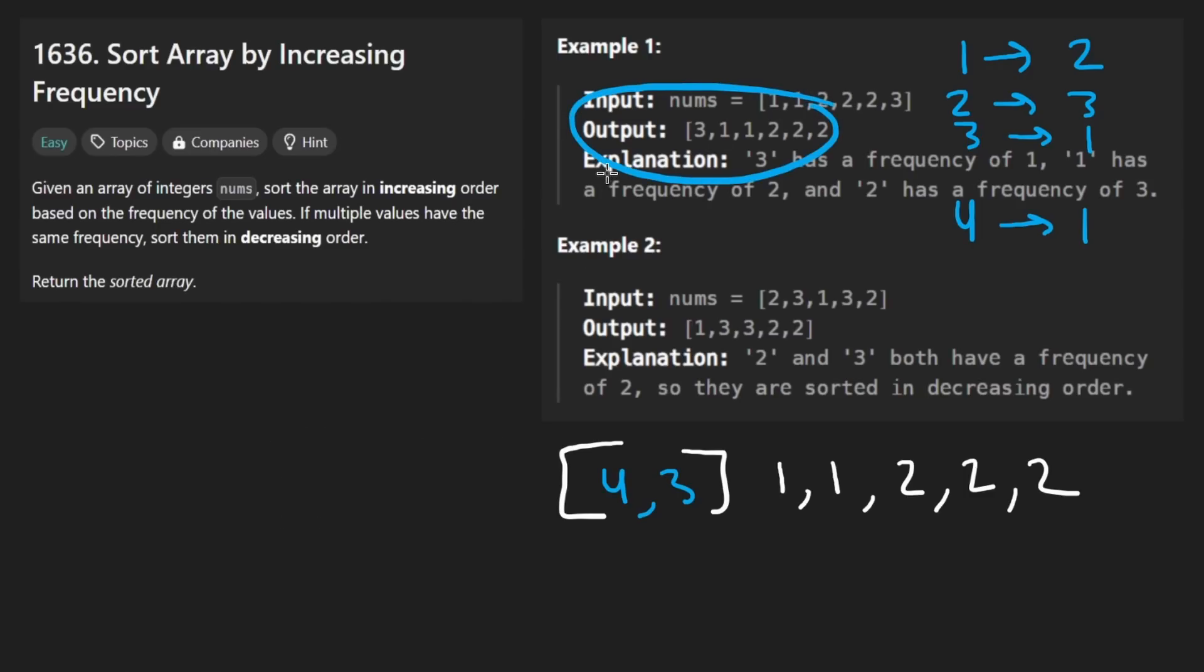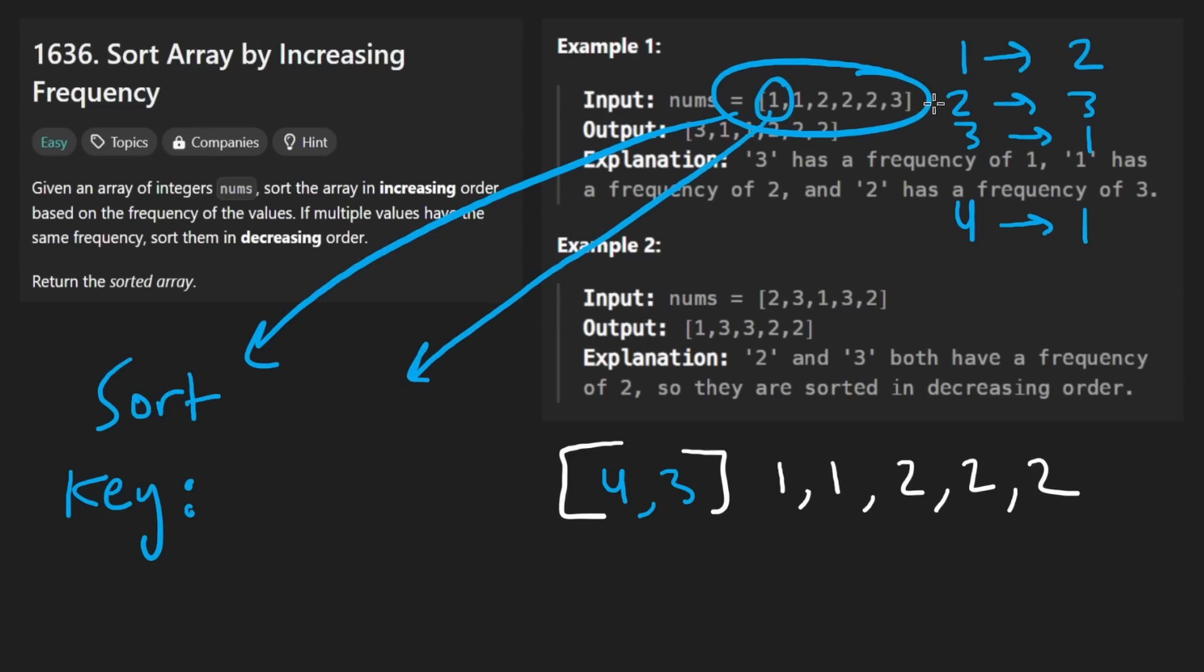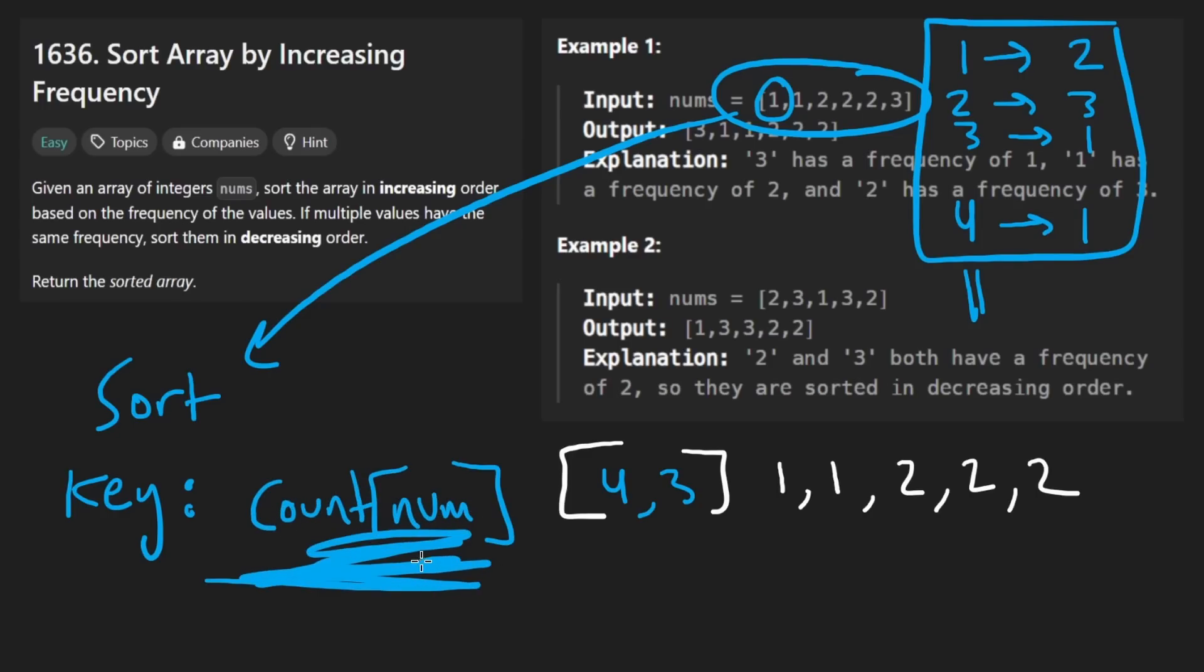When you call a built-in sort method on an input array, we can pass in a custom key. So what do you imagine we want to pass in for the key? Remember we're sorting based on the frequency. So of course, let's just calculate the frequency of each element. The best data structure to use is usually a hash map for that. Then we'll say, for the key, don't sort it based on the element num, sort it based on the count of num or the frequency of num.